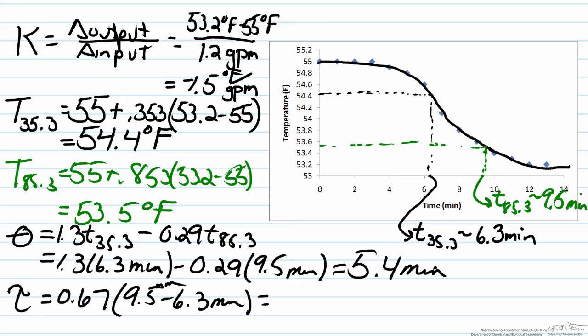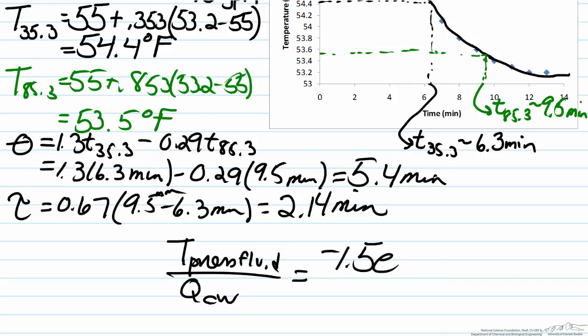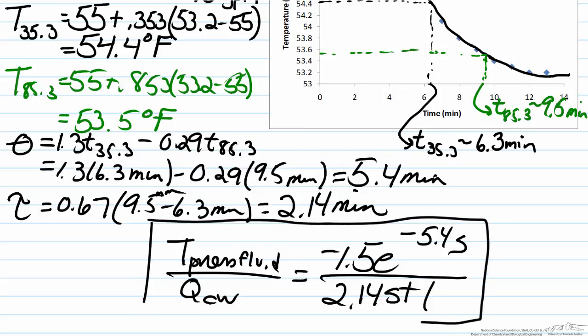We now have determined all three of our parameters, so therefore we know the fact that our final FOPDT transfer function which relates the temperature of the process fluid to the flow rate of the cooling water equals negative 1.5, our gain, e to our dead time, negative 5.4s divided by 2.14s plus 1.